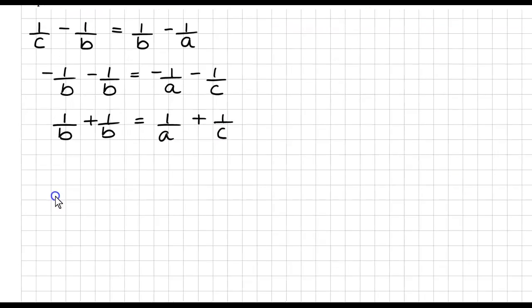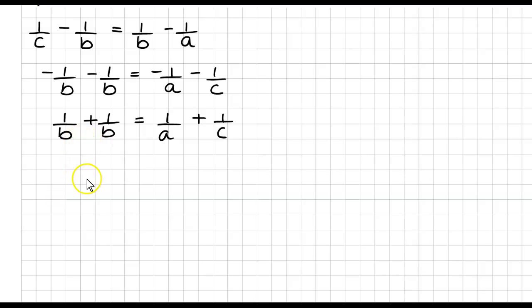Okay, now the next thing, our common denominator here is b, and 1 and 1 is 2. Our common denominator here is ac, and this will give me c, and this one will give me a.